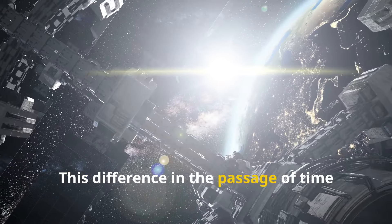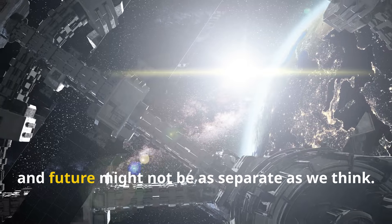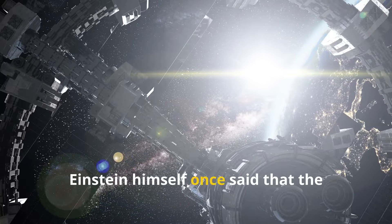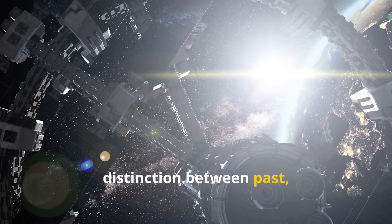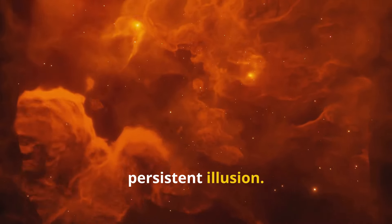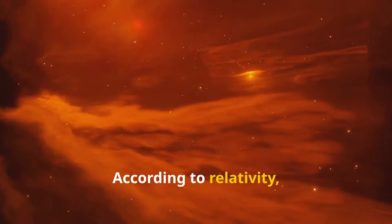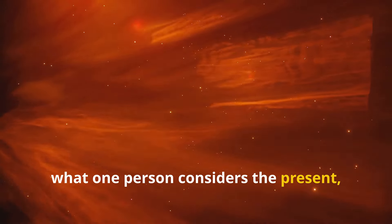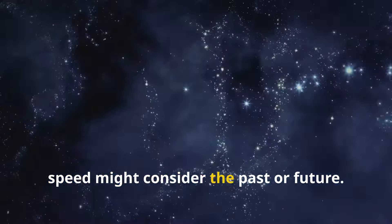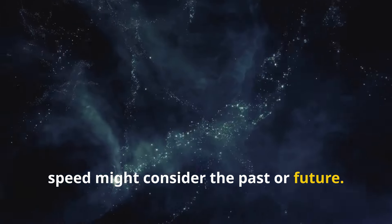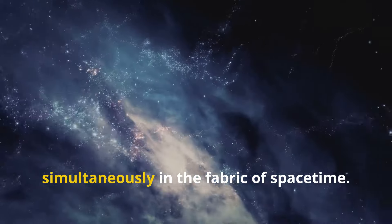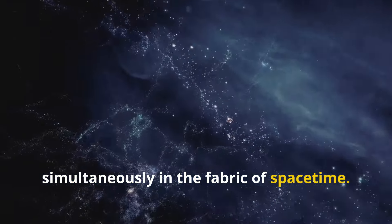This difference in the passage of time suggests that past, present and future might not be as separate as we think. Einstein himself once said that the distinction between past, present and future is only a stubbornly persistent illusion. According to relativity, what one person considers the present, another person moving at a different speed might consider the past or future. This blurring of time zones indicates that all moments might exist simultaneously in the fabric of space-time.